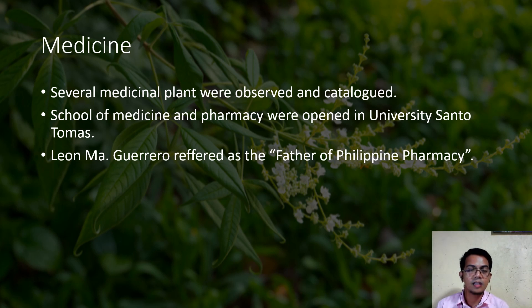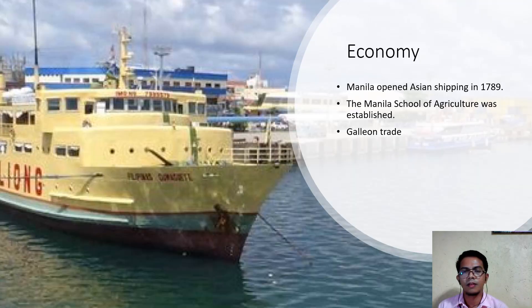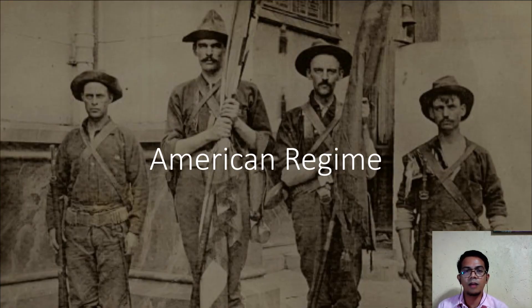During the Spanish era, several Spanish missionaries observed, catalogued, and wrote about Philippine plants, especially those with medicinal values. In 1871, the University of Santo Tomas opened the School of Medicine and Pharmacy, where Leon Maria Guerrero — the Father of Philippine Pharmacy — graduated. For the economy, Manila opened its shipping port to Asian countries, increasing agricultural exports. However, there was little development in the agricultural sector during the first two centuries of Spanish rule.